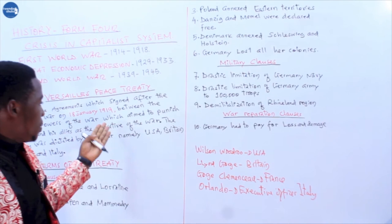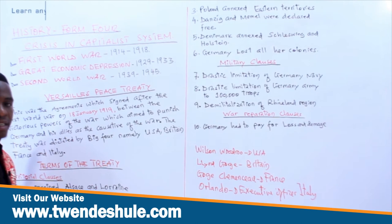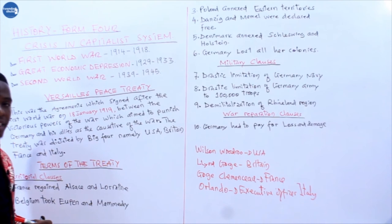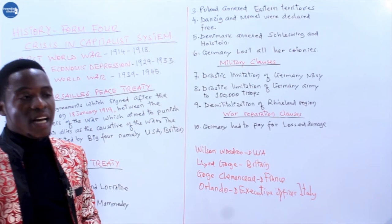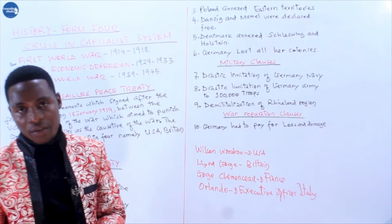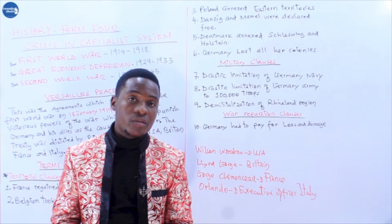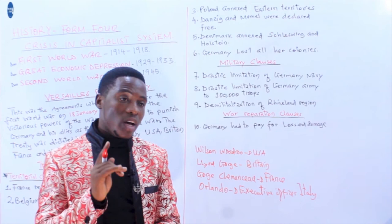After the First World War, when they completed the Versailles Peace Treaty on 18th January 1919, Germany signed the treaty on 28th June 1919. During the treaty proceedings, Germany was not invited to participate, nor were its allies — Austria-Hungary and other countries that fought on Germany's side during the First World War. The meeting was dictated entirely by the victorious powers.